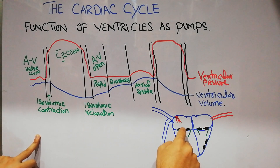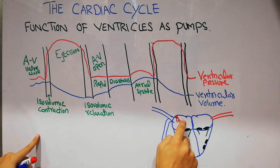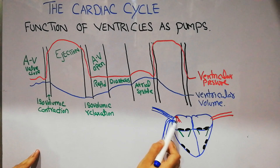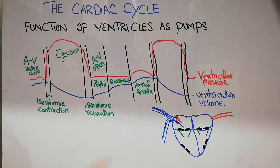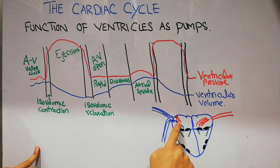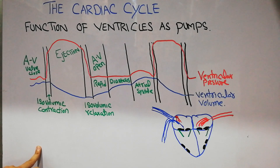The filling process of the ventricles has three different stages. Initially, blood already accumulated in the atria comes directly into the ventricle — this is known as rapid filling, the first phase. Then blood coming from the lungs and body goes directly from the atria into the ventricles — this is known as diastasis, the second step. Finally, the atria contract and atrial systole pumps the remaining blood into the ventricles — the third step.